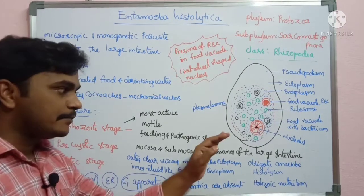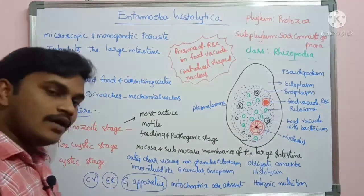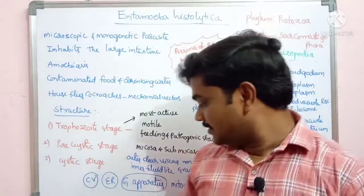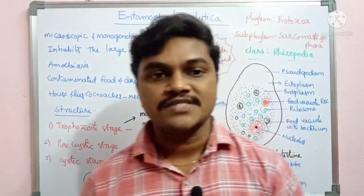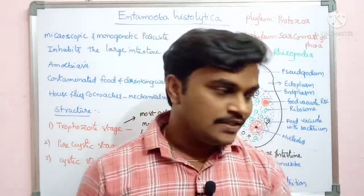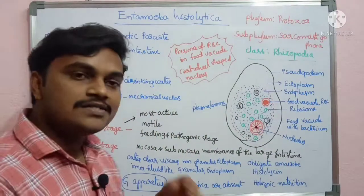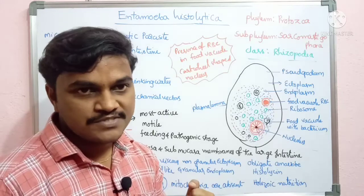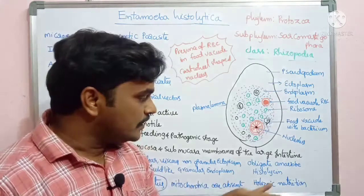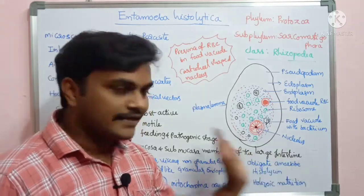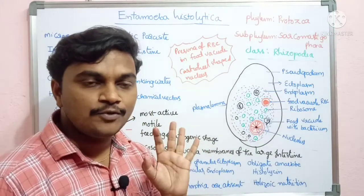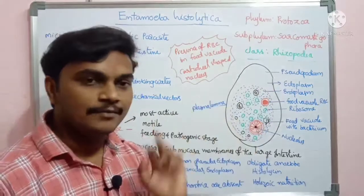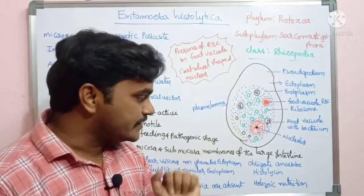Contractile vacuoles are absent in the Entamoeba trophozoite stage. Endoplasmic reticulum is also absent, the Golgi apparatus is also absent, and mitochondria is also absent. Because there is no mitochondria, there is no cellular respiration. That is why it is called an obligate anaerobe — it must carry out anaerobic respiration. There is no cellular respiration in Entamoeba histolytica.